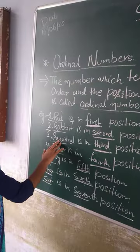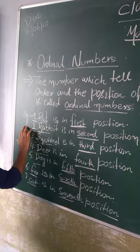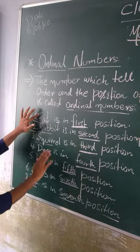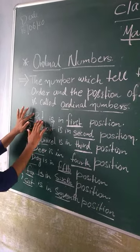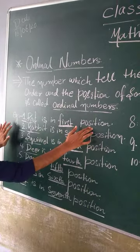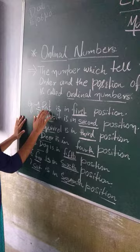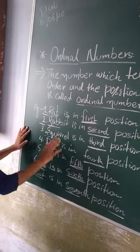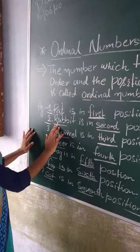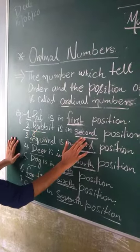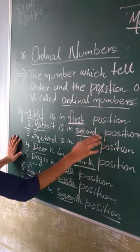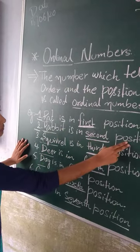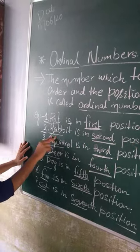See the example. The first one is Rat. Rat is in first position. The second is Rabbit. Rabbit is in second position.